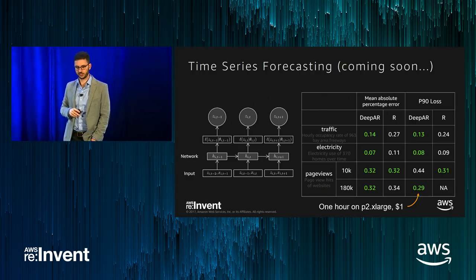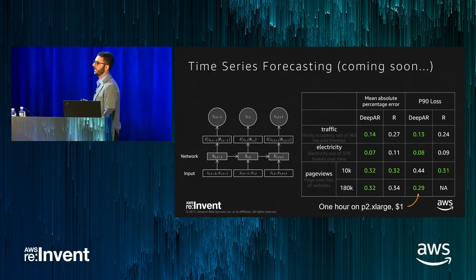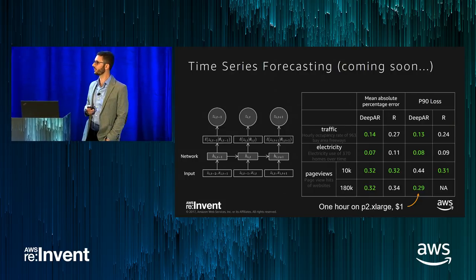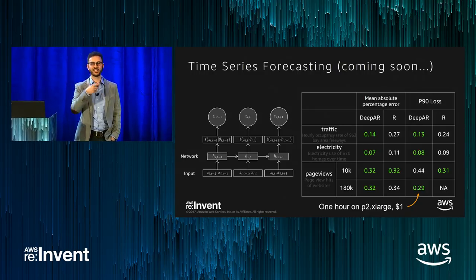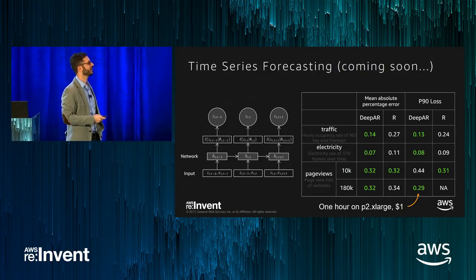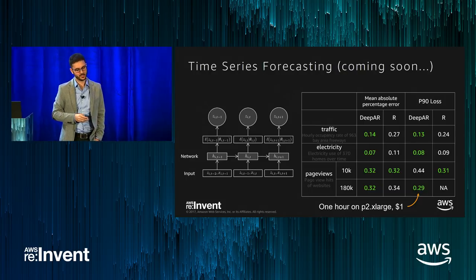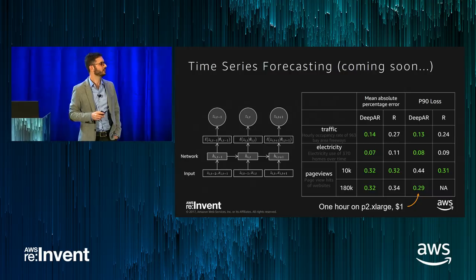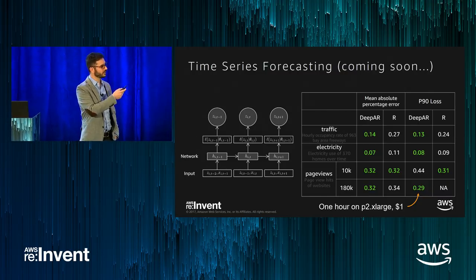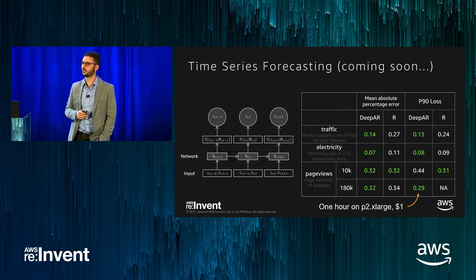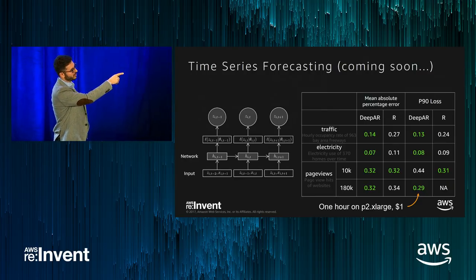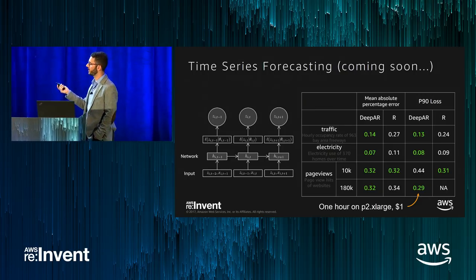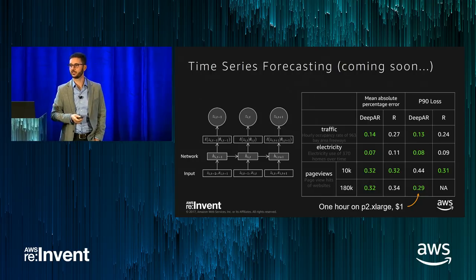Time series forecasting is an algorithm we've used internally at Amazon for a long time — getting items to your doorstep requires forecasting inventory, traffic, and many other variables. The most straightforward competitor is available in R, but we couldn't run it on the largest examples, and we're consistently more accurate. For 180,000 time sequences — which couldn't be run on R — SageMaker takes roughly one hour on a P2 instance, costing approximately $1.